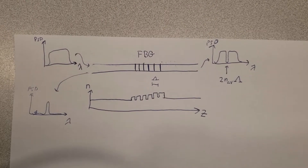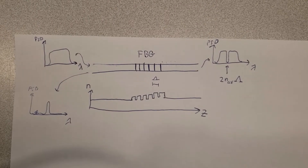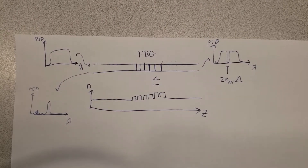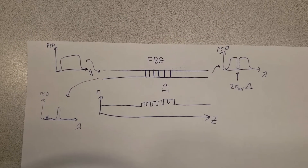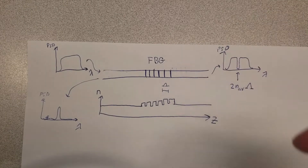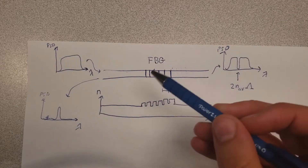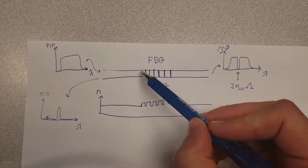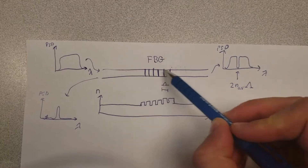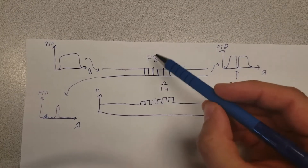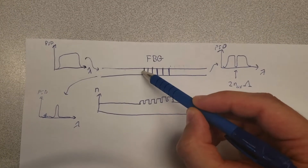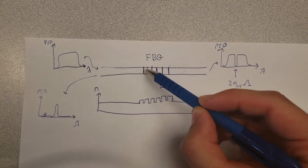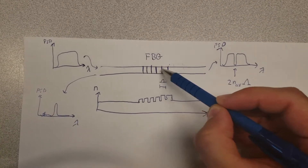Hello and welcome to another video on basic fiber optics. Today I'm going to explain what a fiber Bragg grating is. Essentially, a fiber Bragg grating consists of an ordinary fiber core where there is a periodic change in the refractive index.